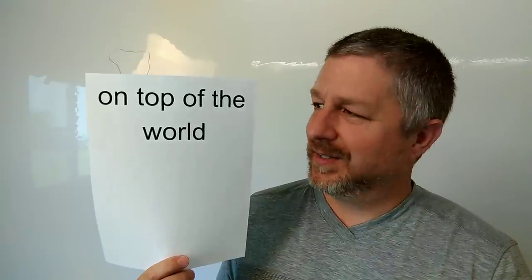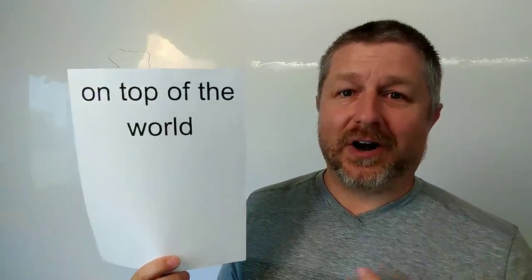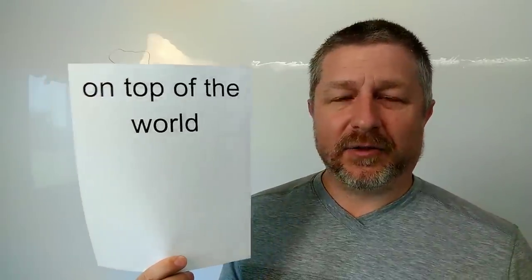Sometimes you're 'on top of the world.' We use this when something really exciting happens. Maybe friends of yours had a healthy baby girl — you would say that they are on top of the world right now, they're just so excited. They're so happy and so excited that they are feeling on top of the world. It just means that you feel really, really good.